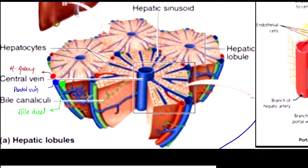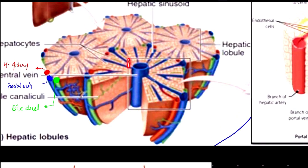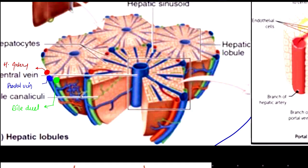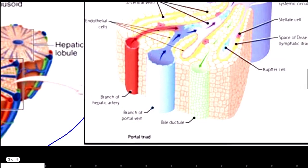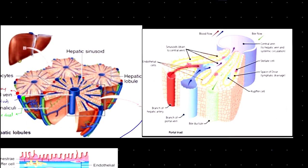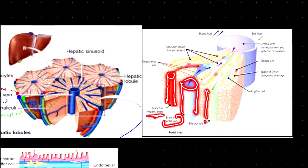Looking at this section in detail, the blue structure is our portal vein, the red structure is our hepatic artery, and the green structure is our bile ductule. These are the three components visible in the portal triad.